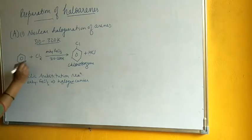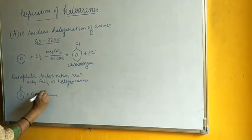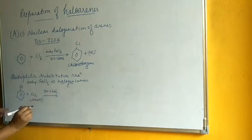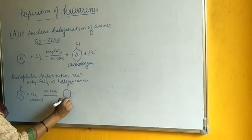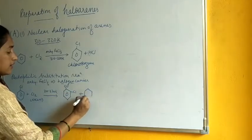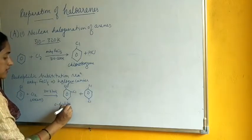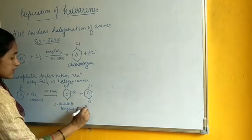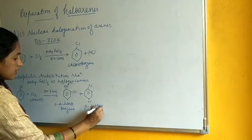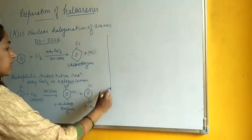If there is excess of chlorine, the chloro group, being ortho-para directing, will direct the incoming Cl group either to the ortho position or the para position, giving ortho-dichlorobenzene and para-dichlorobenzene respectively.